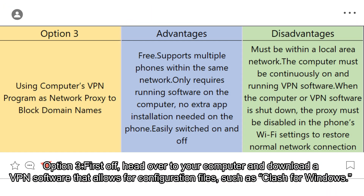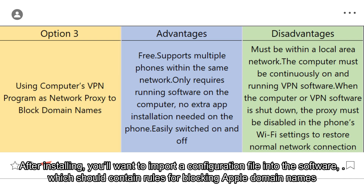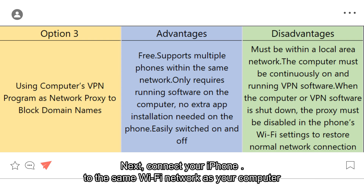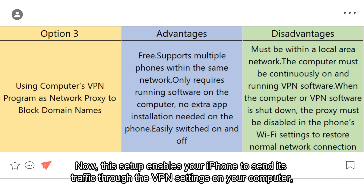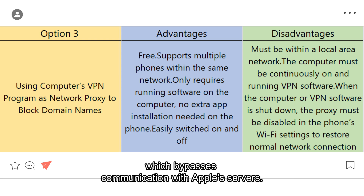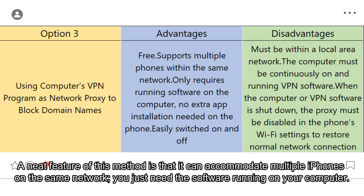Option 3: first, head over to your computer and download a VPN software that allows for configuration files, such as Clash for Windows. After installing, you'll want to import a configuration file into the software, which should contain rules for blocking Apple domain names. Next, connect your iPhone to the same Wi-Fi network as your computer. Go into the Wi-Fi settings on your iPhone and set up a proxy, making sure to input your computer's IP address. This setup enables your iPhone to send its traffic through the VPN settings on your computer, which bypasses communication with Apple's servers. A neat feature of this method is that it can accommodate multiple iPhones on the same network — you just need the software running on your computer.